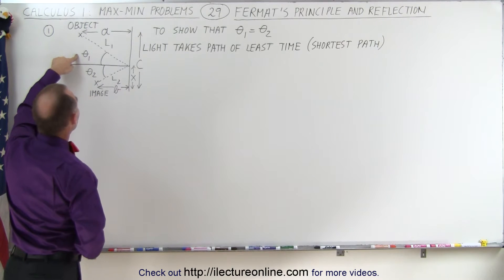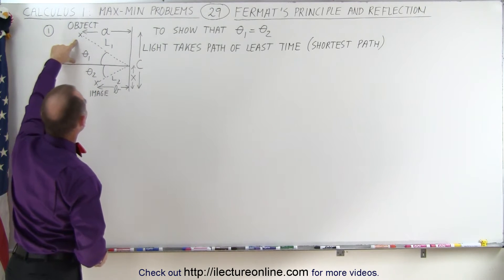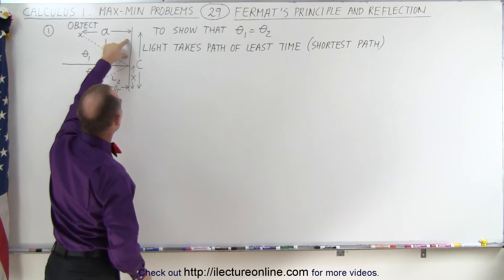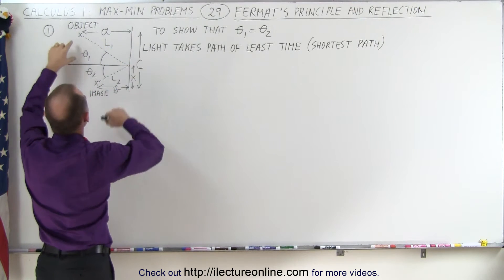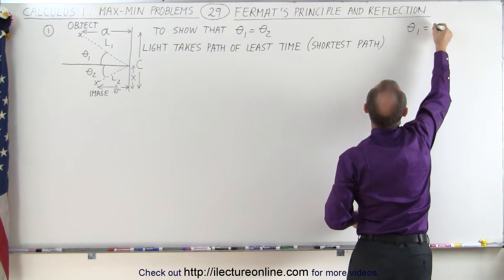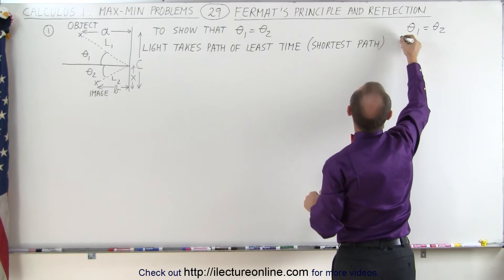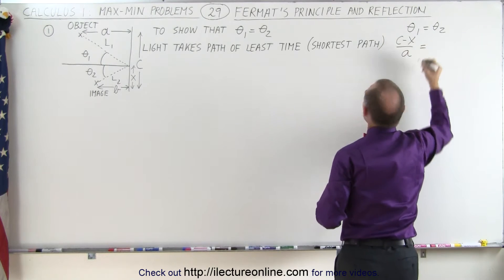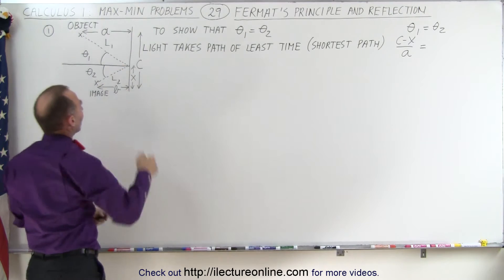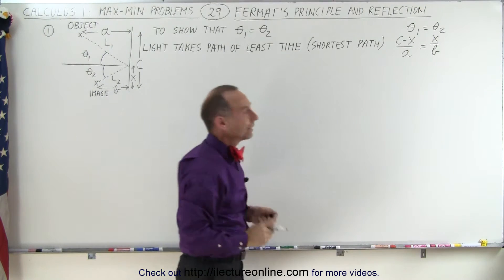Theta 1 can be defined as the ratio of the opposite side to the adjacent side. The opposite side would be this distance here, which is c minus x, and this point is a. So c minus x divided by a would be theta 1. So theta 1 should equal theta 2. We're going to show that c minus x divided by a must equal x over b, where x is the opposite side and b is the adjacent side for theta 2. That's what we're trying to show.